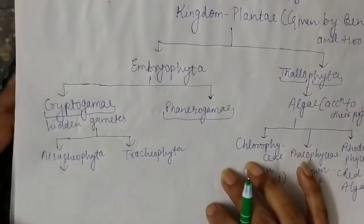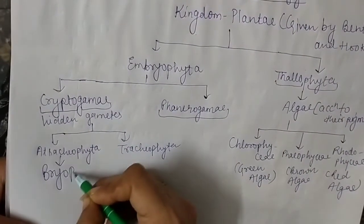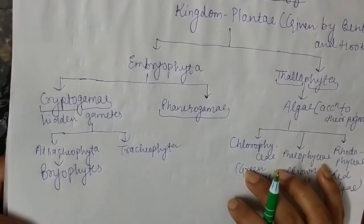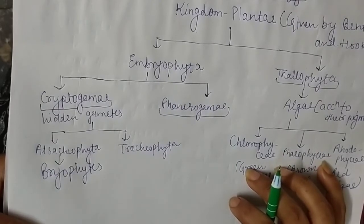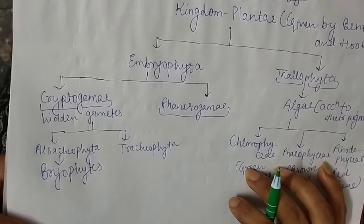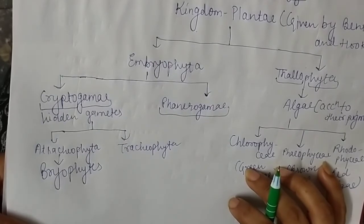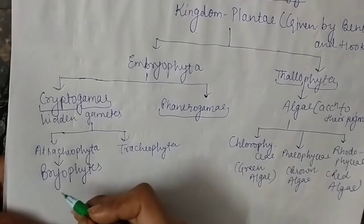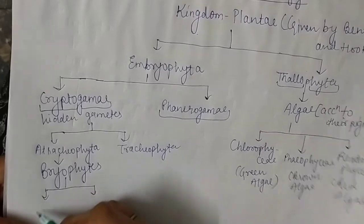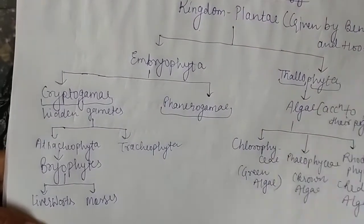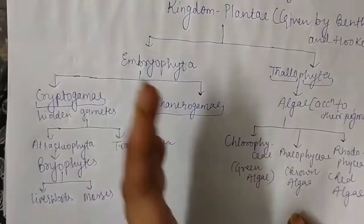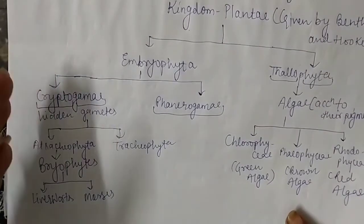The Atracheophyta category includes Bryophytes. Bryophytes are known as the amphibians of the plant kingdom because they can survive on land as well as in water, similar to amphibians like the frog Rana tigrina. Bryophytes are again divided into two parts: liverworts and mosses.